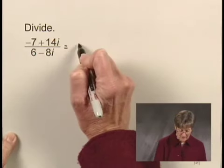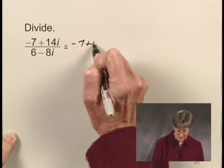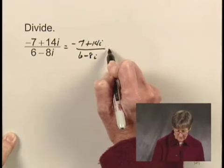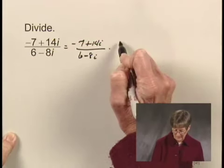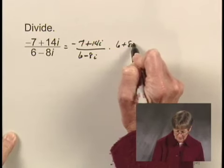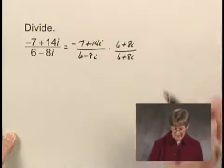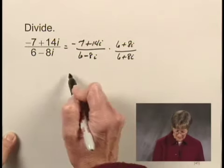So I'm going to say negative 7 plus 14i over 6 minus 8i is equal to that times 6 plus 8i over 6 plus 8i. And now I'm just going to carry out the multiplication.